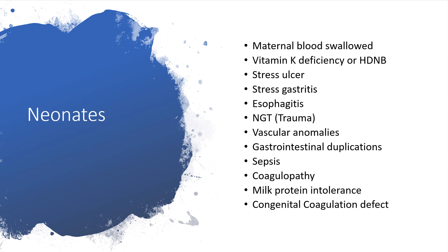In neonates — a child born from the first hour to the first 28 days of life — hematemesis might be as a result of maternal blood being swallowed during childbirth, or vitamin K deficiency, or hemorrhagic disease of the newborn. Or we are dealing with stress ulcer or stress gastritis. Is this also esophagitis or nasogastric tube trauma during resuscitation in the delivery room? Are we dealing with vascular anomalies or gastrointestinal duplications? Is this a result of sepsis or coagulopathy of any cause including sepsis?